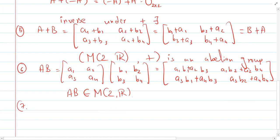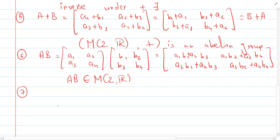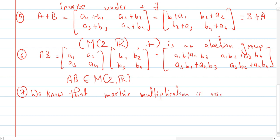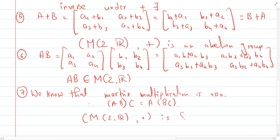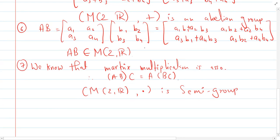The seventh property is associativity of multiplication. I will skip the full coordinate-wise proof as it would take much more space. Instead, I directly use the known result that matrix multiplication is associative — that is, (AB)C = A(BC). Therefore M₂(ℝ) under multiplication is a semi-group. A semi-group means it satisfies binary closure and associativity — it is like a 'half group' with those two properties.